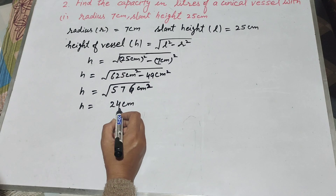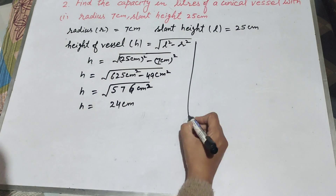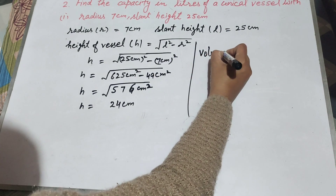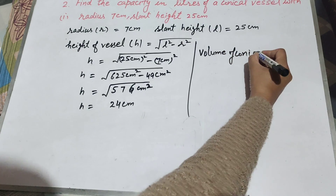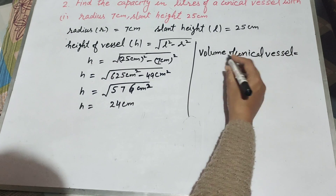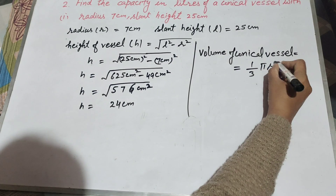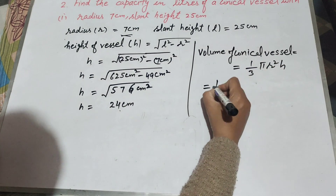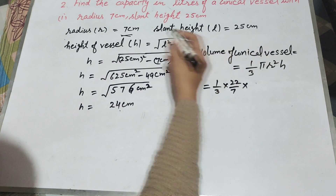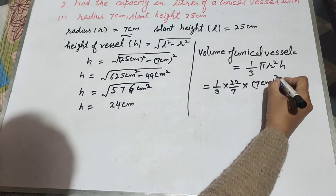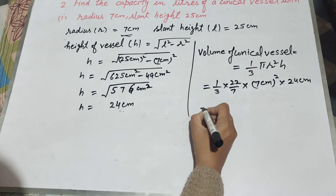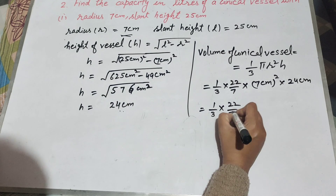Now we find capacity in liters, so we need to find the volume. Volume of conical vessel is equal to one-third pi r squared h. It is equal to one-third times pi, whose value is 22 over 7, times r which is radius equal to 7 centimeter squared, into height which we found as 24 centimeter.